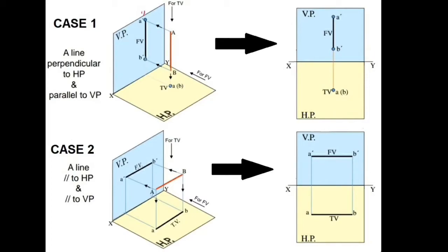In case number one, the line is perpendicular to HP and parallel to VP. You can see in this figure the orientation of the line. The shadow of the point in the front view falls on the vertical plane, and the shadow from the top view falls on the horizontal plane as a point. In the orthographic projection, the horizontal plane is rotated clockwise. From projections of lines onwards, we focus only on the first quadrant, where VP is above the XY line and HP is below. The top view comes as a point below the XY line. The front view shows a vertical line representing line AB, and the top view is A(B), a point — meaning when viewed from the top, point A is seen first with point B lying below it.